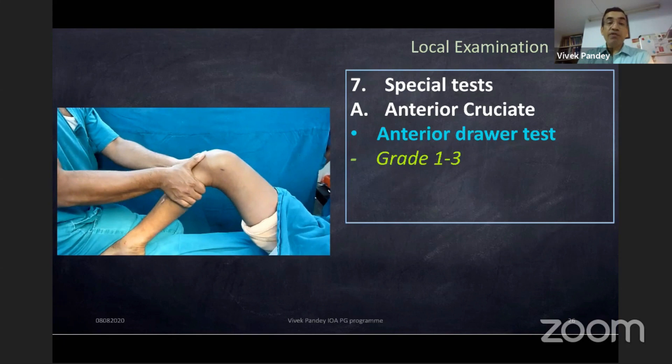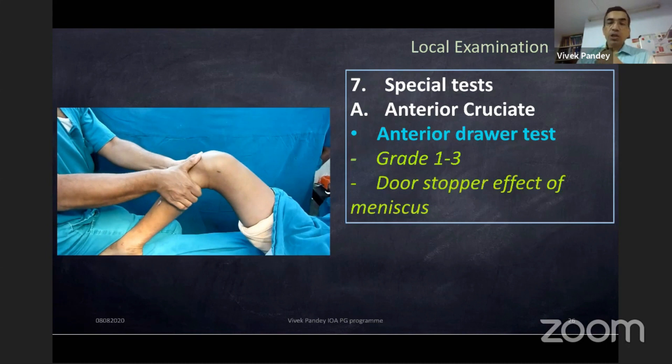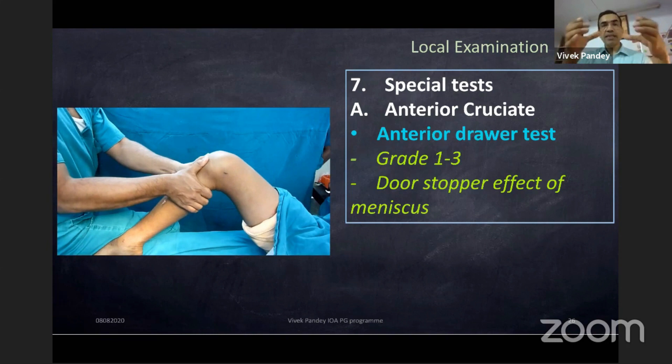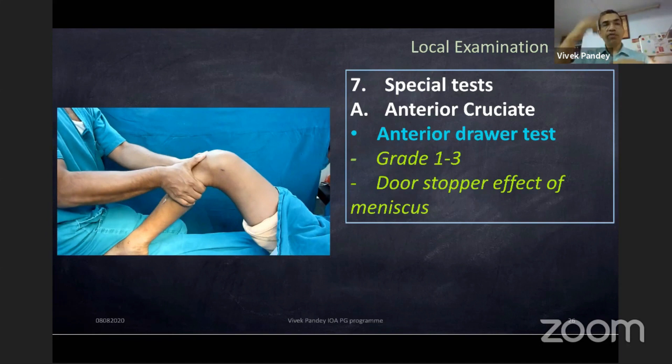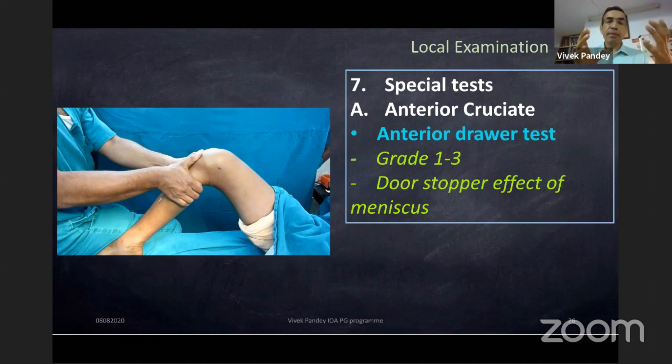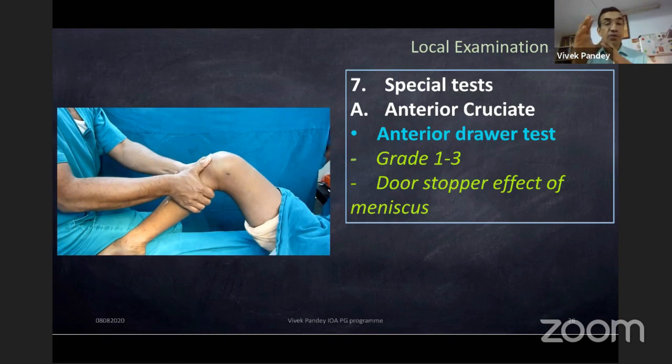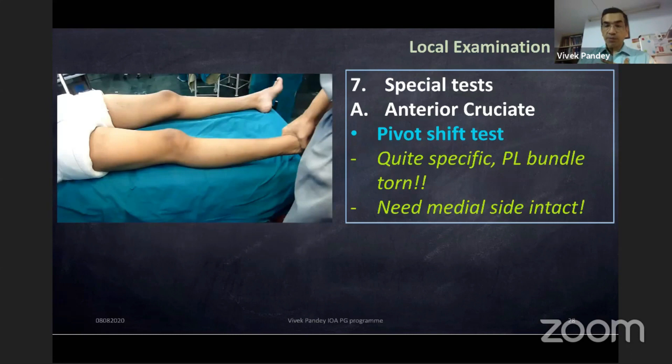The doorstop effect of the meniscus: when the meniscus is intact, it will not allow the tibia to come forward because the round femoral condyle abuts against it. So a patient can have an ACL tear but a negative anterior drawer — it could be due to the doorstop effect of the meniscus.